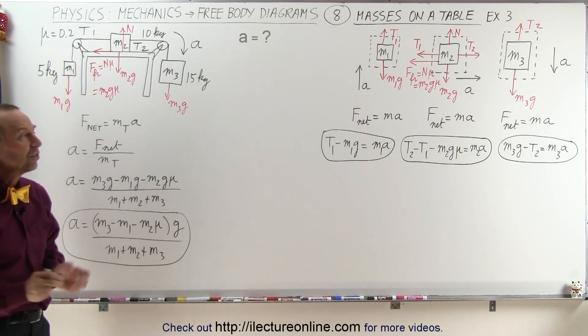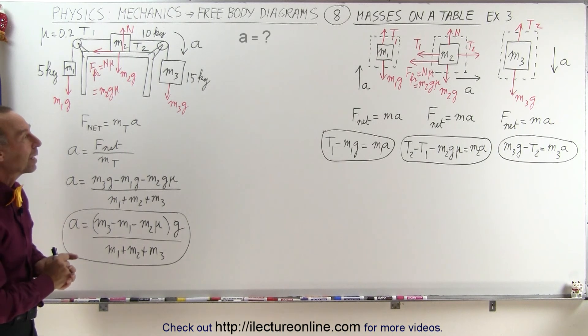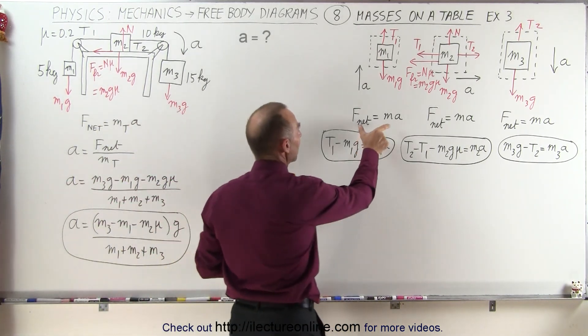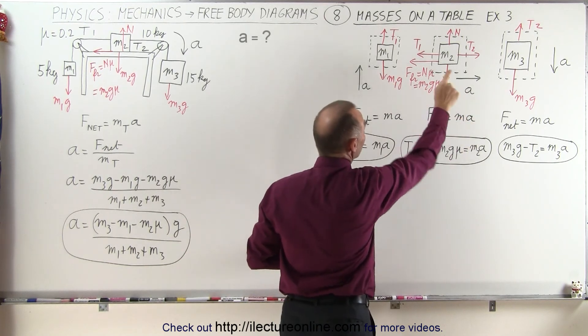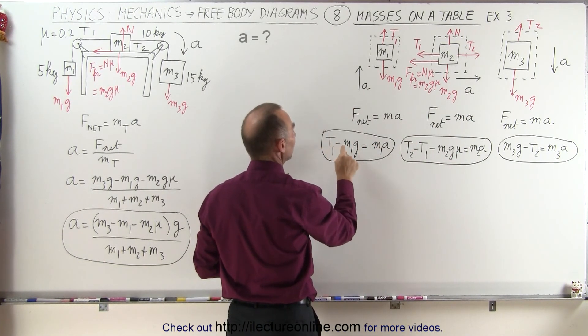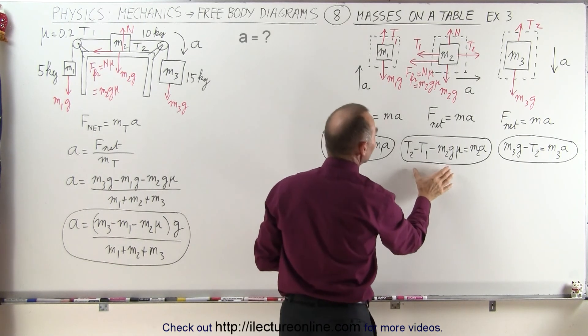How do we do this now when we have the three masses separate? We draw three free body diagrams, and now we have three F equals MA equations for each of the three masses. For the first mass, we have the tension aiding the acceleration, minus the weight opposing the acceleration.